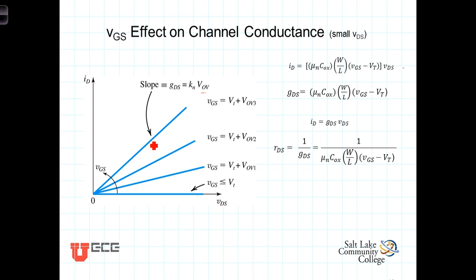And in fact, this slope is, the slope of this line is the conductance. And as we pointed out before, the current then is just equal to the conductance times VDS.